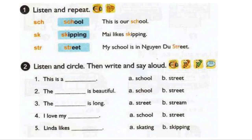Page 44. Activity 2. Listen and circle, then write and say aloud. 1. This is a street. 2. The street is beautiful. 3. The stream is long. 4. I love my school. 5. Linda likes skating.